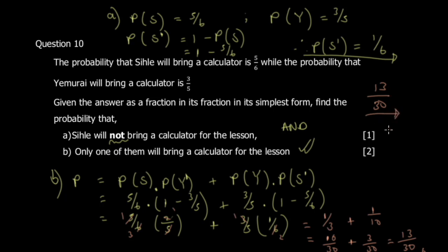Therefore the probability that only one of them brings a calculator is 13/30. As a check, 13/30 is less than 1, which is correct for a probability. That concludes question ten — we identified both scenarios, multiplied probabilities for simultaneous events, and added the two results.